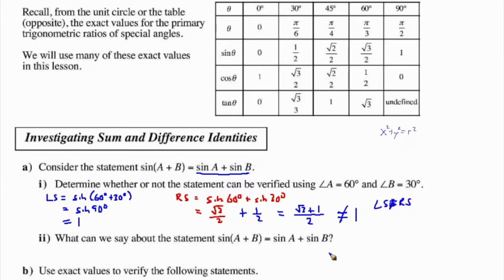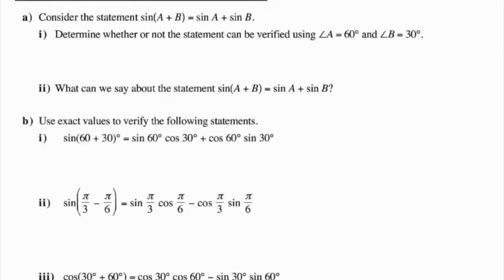So what can we say about the statement that the sine of the first angle plus the second angle is equal to sine of A plus sine of B? This is NOT true.